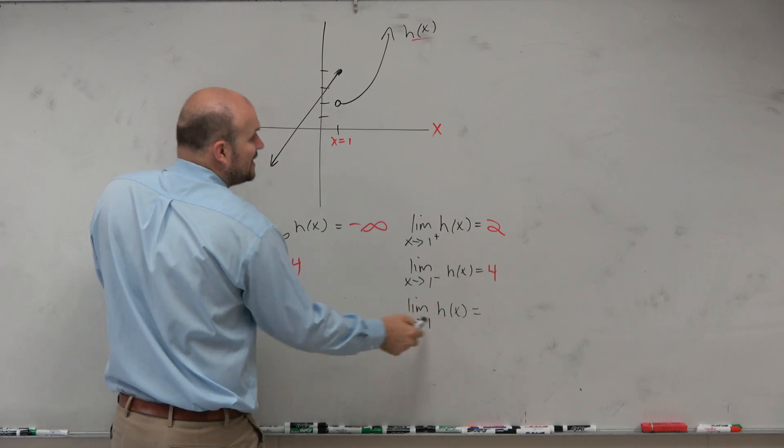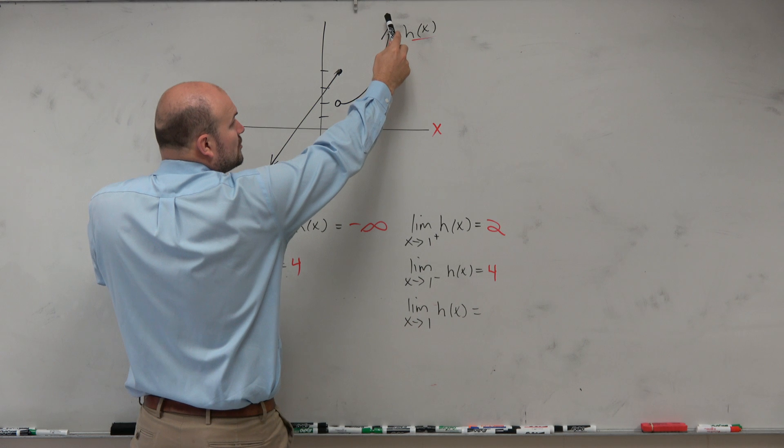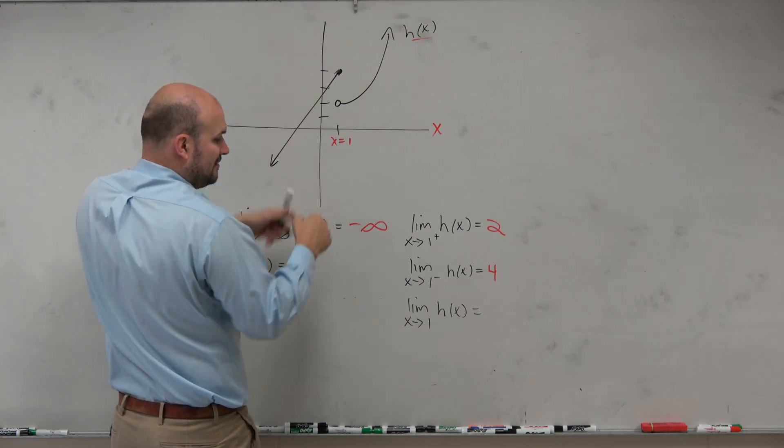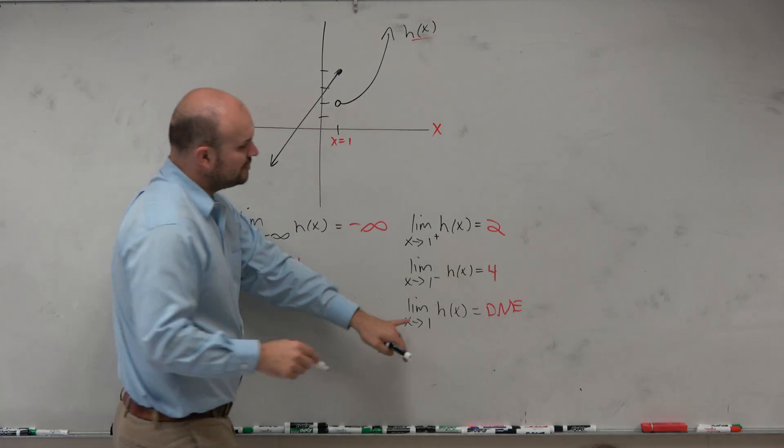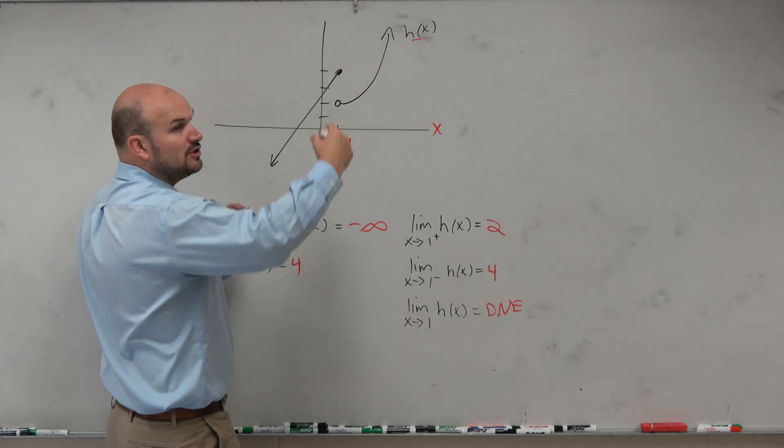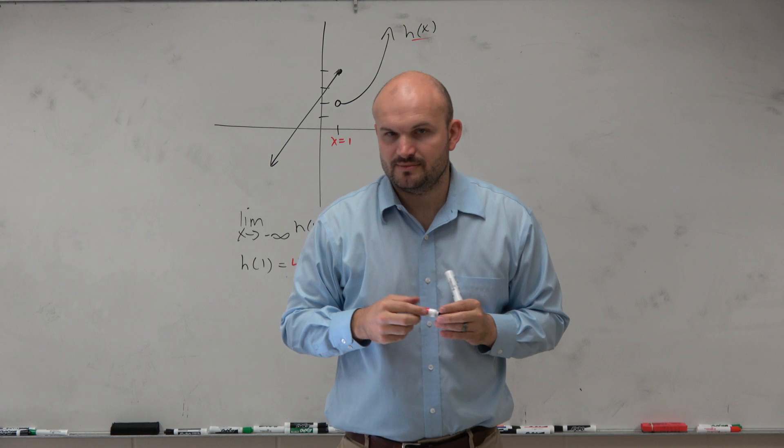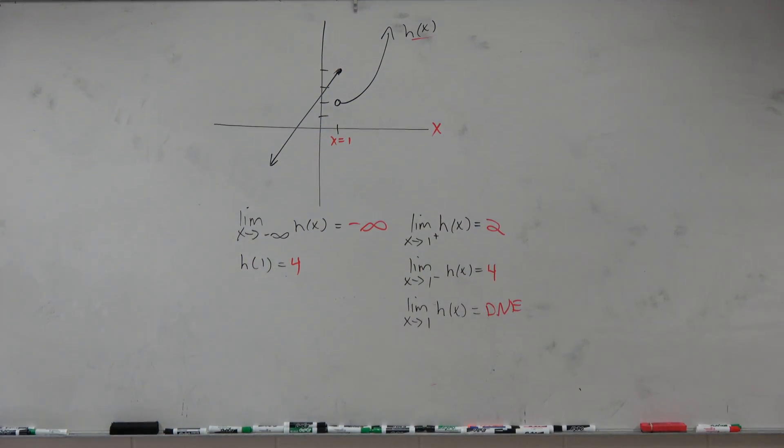So when your general limit, again, if you guys remember that last example, when you are approaching the same value but you end up at different spots, therefore the general limit does not exist. So the general limit only exists when you approach the same value from the left and from the right. Make sense? Kind of? No, that was. Yes. Your words, did you ever pronounce?